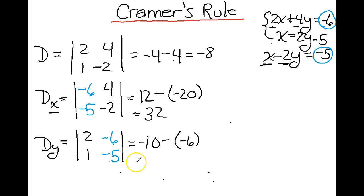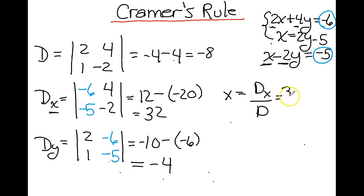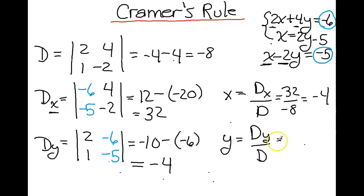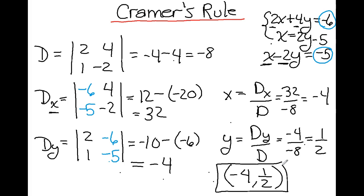Let's go ahead and calculate x and y. x equals D sub x over D, which is 32 over negative 8, which is negative 4. y equals D sub y over D, which is negative 4 over negative 8, which is one half. Since we are solving the system of equations, we write the answer as an ordered pair. That's example number 1.